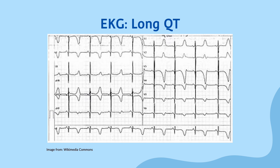A quick and dirty method is: if the QT interval is equal to or greater than half of the R-to-R interval, you should have a higher suspicion for Long QT syndrome. Most of this is outside the scope of Step 1, but it is useful to know for clinical rotations, and the quick and dirty method would be useful on Step 1.